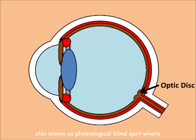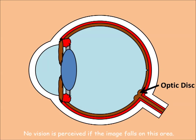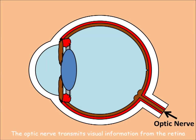The optic disc, also known as the physiological blind spot, is where no rods and cones are present. No vision is perceived if the image falls on this area. The optic nerve transmits visual information from the retina to the brain.